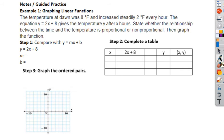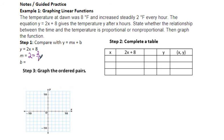Here's our first example. We're going to graph this linear function. The temperature at dawn is 8°F and increases steadily 2°F every hour. The equation y equals 2x plus 8 gives the temperature y after x hours. State whether the relationship between time and temperature is proportional or non-proportional, then graph the function. Our equation is given to us. Remember, m is always right here next to x, so our slope is 2, which we can also write as 2 over 1. We can go the opposites: negative 2 over negative 1. And our y-intercept is 8. I like to write it as a point (0, 8).